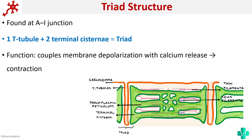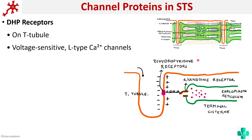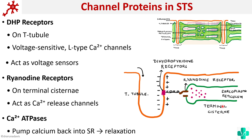To understand the function of the T-tubule and sarcoplasmic reticulum, we need to understand the different channels present. First, there are DHP or dihydropyridine receptors present on the T-tubule — these are voltage-sensitive L-type calcium channels that act as voltage sensors. These are connected to ryanodine receptors present on the terminal cisternae, which act as calcium release channels on the sarcoplasmic reticulum.